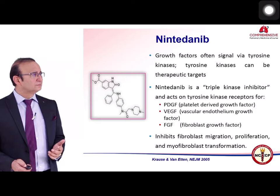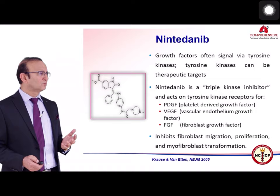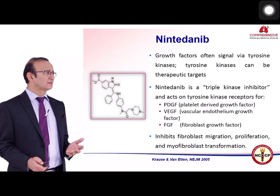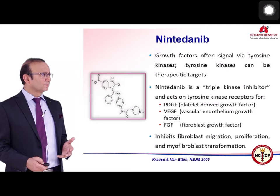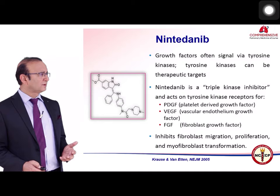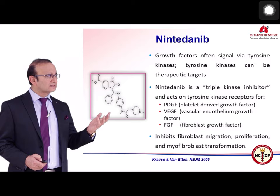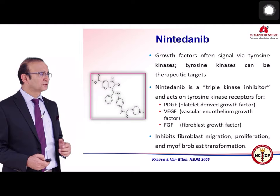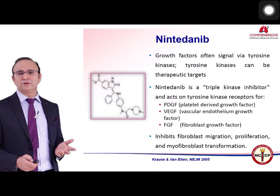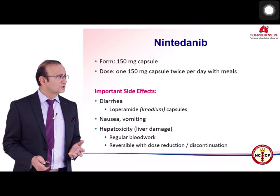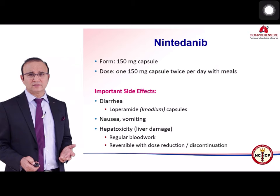Nintedanib is a tyrosine kinase inhibitor. Growth factors often signal via tyrosine kinase receptors — specifically receptors for platelet-derived growth factor, vascular endothelial growth factor, and fibroblast growth factor. By acting on these receptors, nintedanib inhibits fibroblast migration, proliferation, and myofibroblast transformation, making it a potentially useful drug in IPF. It is used as a 150 mg capsule twice daily with meals.